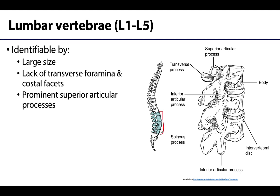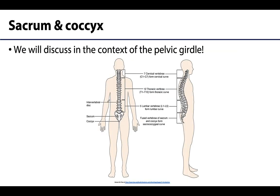The five lumbar vertebrae are identifiable mainly because they are quite large compared to other vertebrae. T12 may be similar in size to L1, but the rest of the thoracic vertebrae are considerably smaller than the lumbar vertebrae. To distinguish them: look for absence of costal facets (ruling out thoracic) and absence of transverse foramina (ruling out cervical). The sacrum and coccyx, the fused immovable vertebrae, will be discussed in the context of the pelvic girdle.